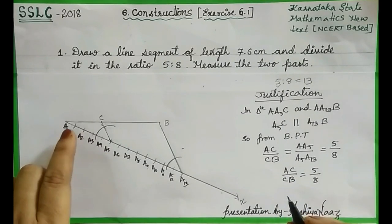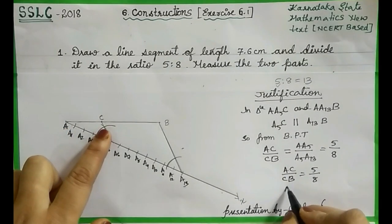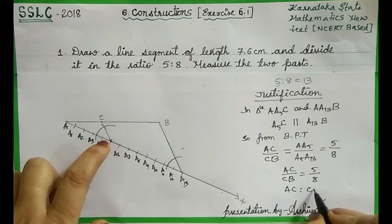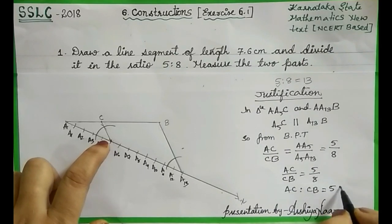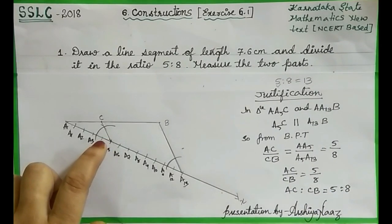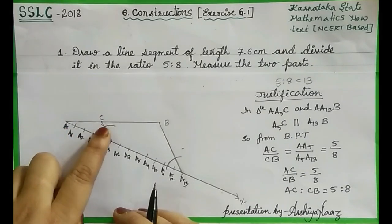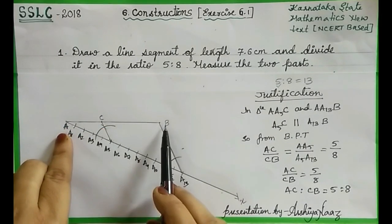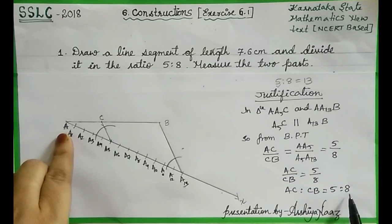Then we can write in ratio form: AC is to CB is equal to 5 is to 8. Thus we have divided the line AB in the ratio 5 is to 8.